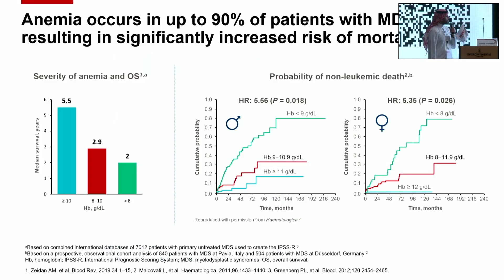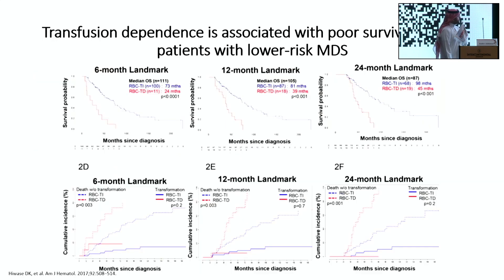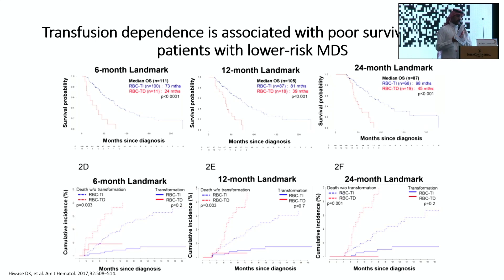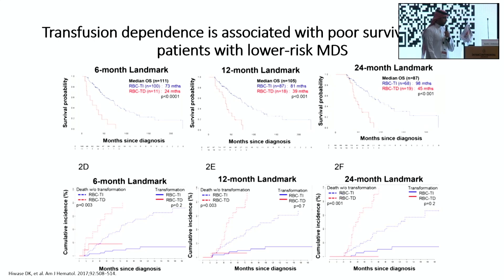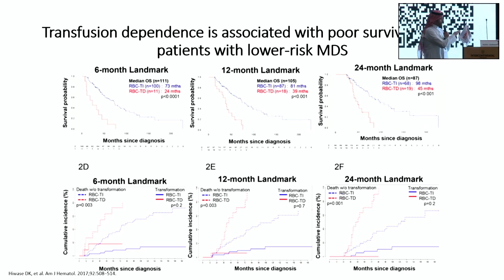Anemia is the most common presentation for patients with low-risk MDS, and it is associated with increased mortality based on multiple cohorts. It is really associated with a huge decrease in survival, especially for those who are transfusion dependent. Patients who are heavily transfusion dependent have a worse drop in their overall survival, and this is actually regardless of whether they progress into acute myeloid leukemia or not.